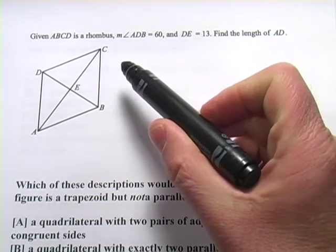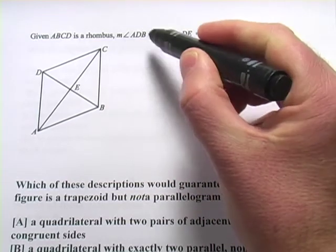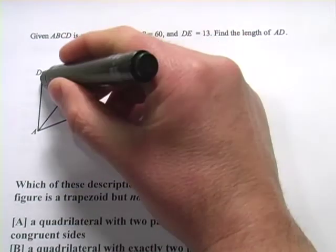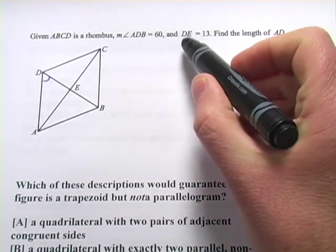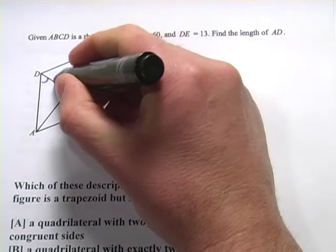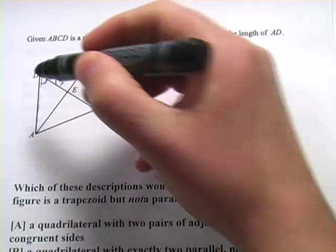This first one says, given ABCD is a rhombus, and ADB, so that would be this angle right here, is 60, and DE equals 13, so this one's 13, find the length of AD, so we want to find this side right here.